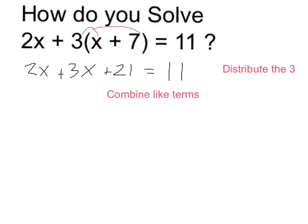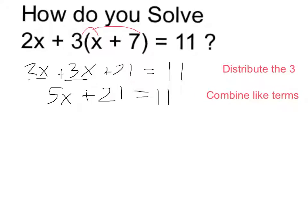Next, I want to get my x's together by combining like terms. I have a 2x, later I have three more, so in total I have 5x's, and that leaves me with 5x plus 21 equals 11.